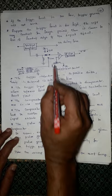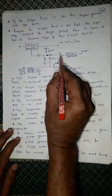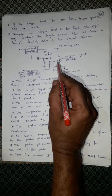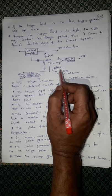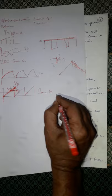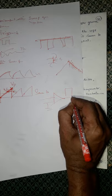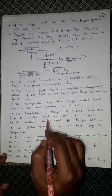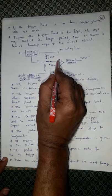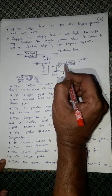The trigger input signal is applied to a comparator whose reference level is set by the trigger level control panel. The comparator has two inputs — one acts as the trigger level control reference, which can be adjusted, and the other is the internal signal. The comparator changes its output from positive to negative or negative to positive as soon as the trigger input exceeds the reference voltage.